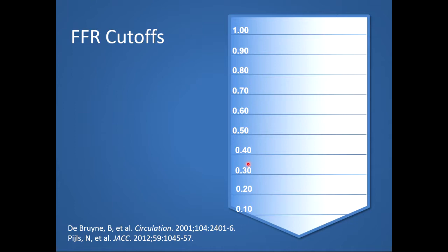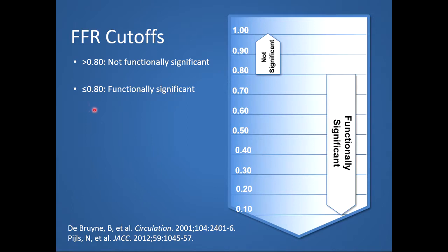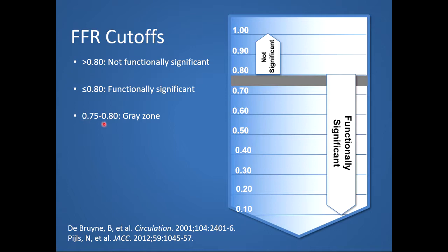Let's talk about FFR cutoffs. FFR is not functionally significant — the lesion is not producing myocardial ischemia — when the FFR value is greater than 0.8. When the FFR value is 0.8 or less, the lesion is functionally significant and is producing myocardial ischemia. Like all diagnostic tests, FFR has an area of ambiguity spanning less than 10% of the entire range of FFR values. This is referred to as the gray zone where FFR values are between 0.75 and 0.8, and sound clinical judgment is needed to decide whether myocardial revascularization should be performed.